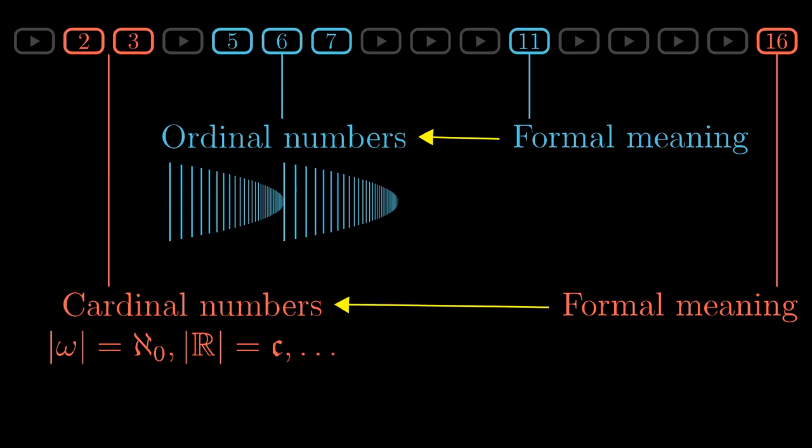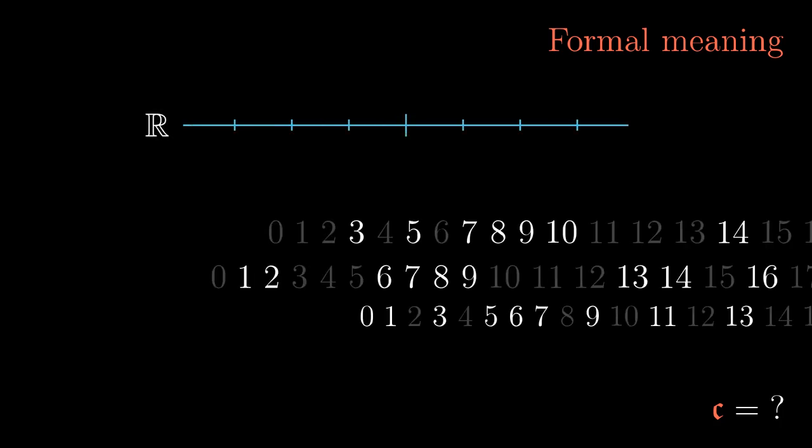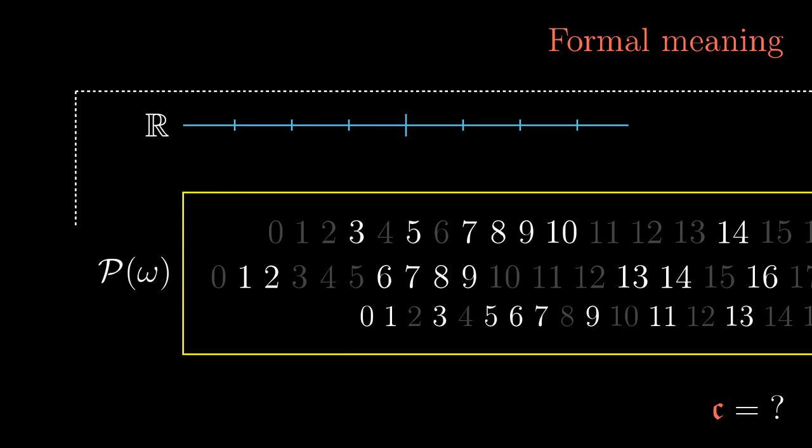In the formal world of set theory, every object should correspond to a set. So which set should represent, for example, the cardinal number continuum? Continuum should represent all the sets of the same size as real numbers have, or the power set of omega. One idea could be to take all the sets of size continuum and pack them into a set, but we cannot do that. The axioms don't allow this and we would obtain a contradiction, for example via Russell's paradox.